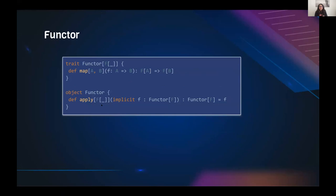Now let's move to Functor. Functor has a 'map' method that enables us to access a certain container and apply a given function to build a new container with the result of that function. Unlike monoid or monoid, Functor doesn't have a simple type — it has a type constructor 'F' with a single argument, so Functor is a higher-kinded type.